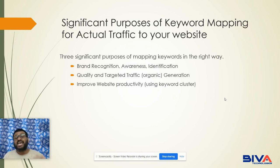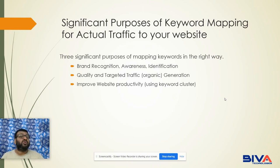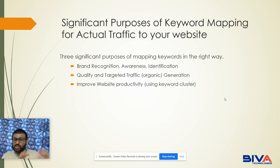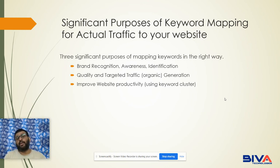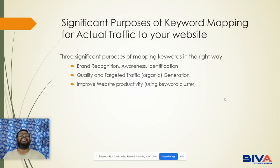Number two is quality and targeted traffic — mainly organic. When you are targeting a particular keyword, you can identify who your targeted audience is. Suppose you are selling a product or offering a service and you are targeting people who actually need it — that will give you more conversion. That's why I personally suggest you focus on keyword mapping, because only keyword mapping can solve this problem effectively.